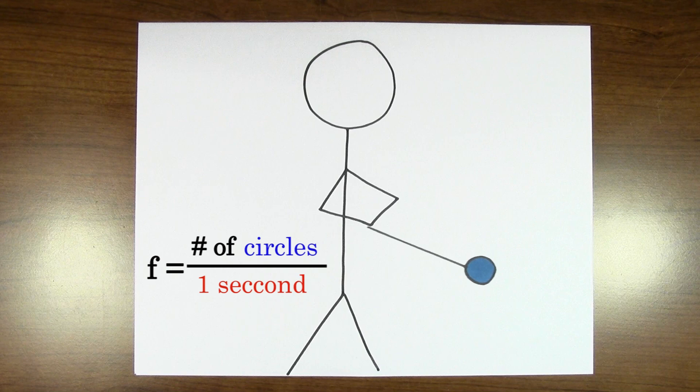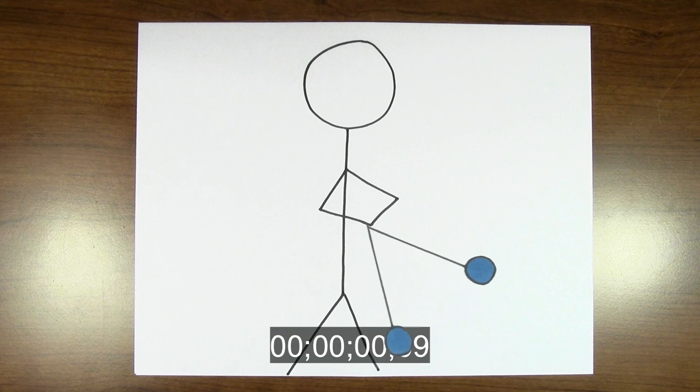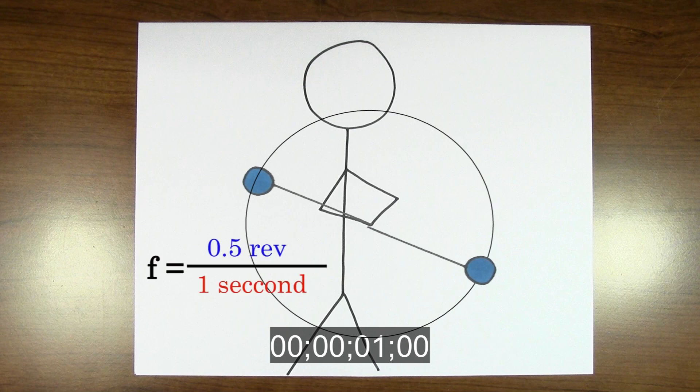This yo-yo doesn't even make it through a whole circle in one second. It only makes it through half a circle in one second. So the frequency would be 0.5 revolutions per second.